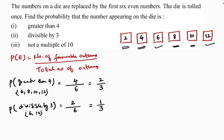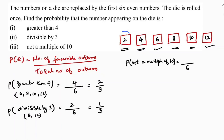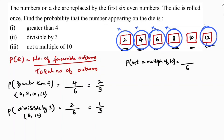Third question: probability of not a multiple of ten. Total outcomes are six. From our set, ten is the only multiple of ten — just one outcome. So not a multiple of ten gives five favorable outcomes: two, four, six, eight, twelve. Probability of not a multiple of ten is five by six, and probability of a multiple of ten is one by six.